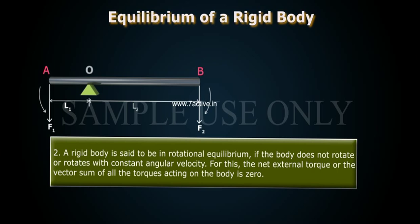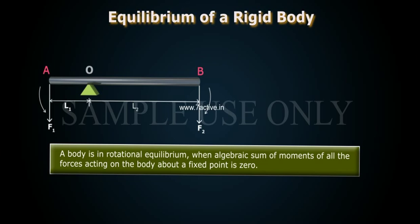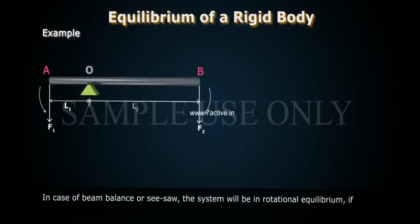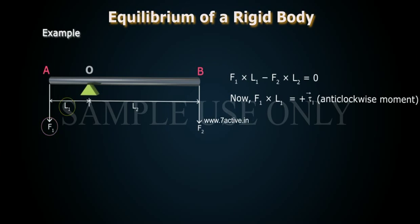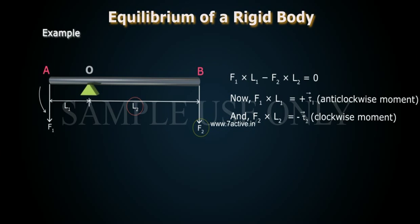For rotational equilibrium, the net external torque, or the vector sum of all the torques acting on the body, is zero. A body is in rotational equilibrium when the algebraic sum of moments of all the forces acting on the body about a fixed point is zero. For example, in the case of a beam balance or see-saw, the system will be in rotational equilibrium if F₁·L₁ − F₂·L₂ = 0. Here F₁·L₁ = +τ̄₁ (anticlockwise moment) and F₂·L₂ = −τ̄₂ (clockwise moment), so τ̄₁ + τ̄₂ = 0, i.e., Στ̄ = 0.